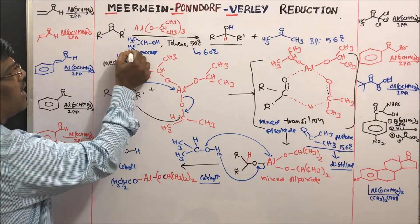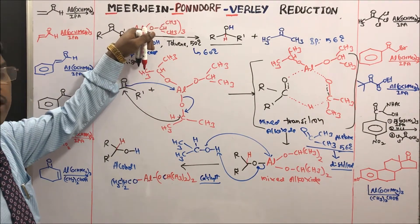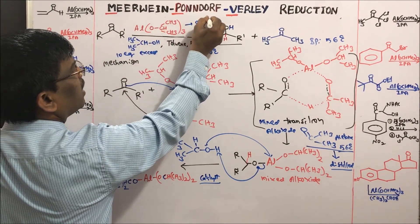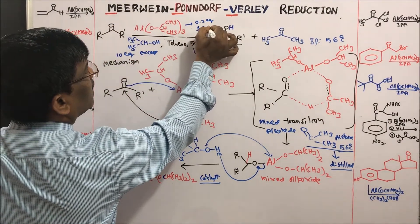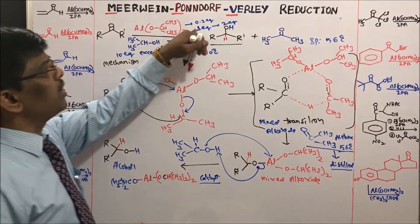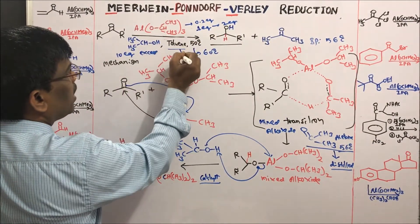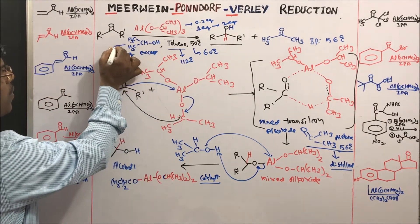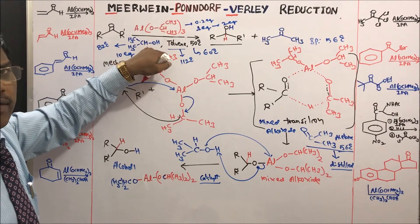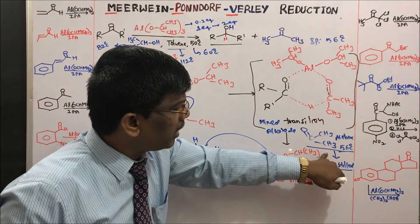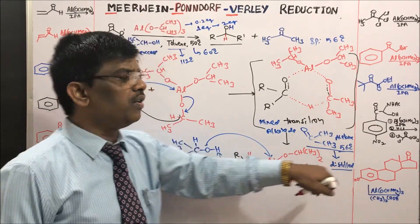Excess isopropyl alcohol is required to transfer the proton from isopropyl alcohol to the mixed alkoxide, so typically 10 equivalents of isopropyl alcohol are used. For aluminum isopropoxide, 0.2 equivalents can be used, though for hindered carbonyl compounds you may use 1–2 equivalents. Toluene is used as solvent with a boiling point of 112°C, while isopropyl alcohol boils at 82°C, making acetone — boiling at 56°C — easy to distill out.